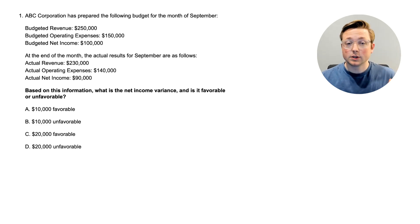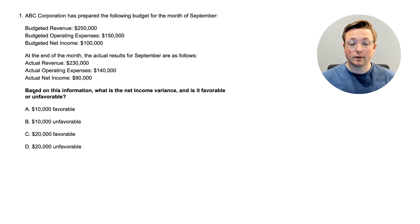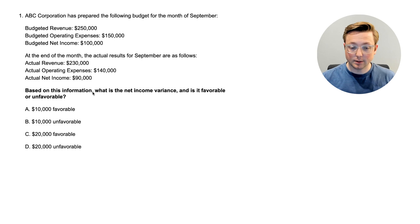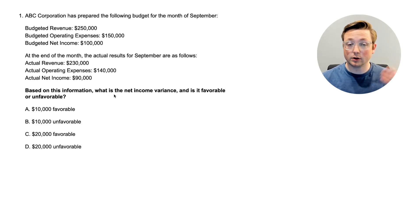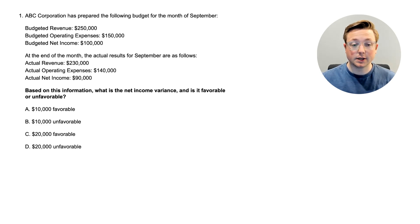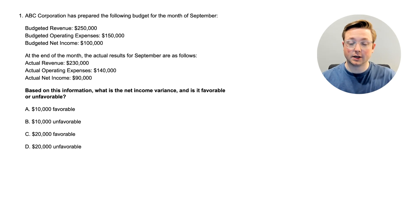Here we are at question one. Something we always like to point out when doing calculation questions is to read the last part of the question first — that gives you context because that's usually what is really being asked. So: what is the net income variance and is it favorable or unfavorable? ABC Corporation has prepared the following budget for the month of September. Budgeted revenue was $250,000, budgeted operating expenses were $150,000, and budgeted net income was $100,000 — which makes sense: $250,000 less $150,000 equals $100,000.